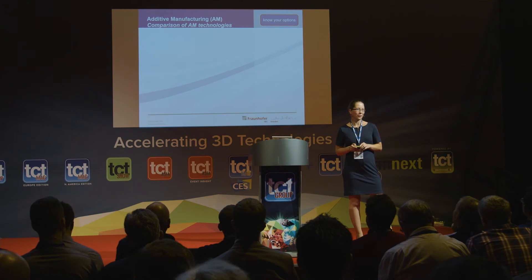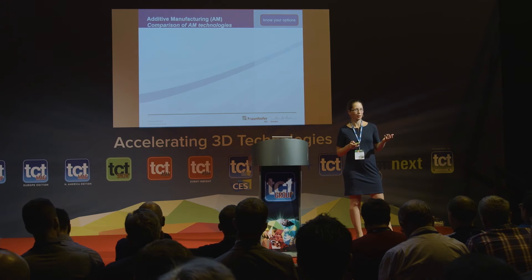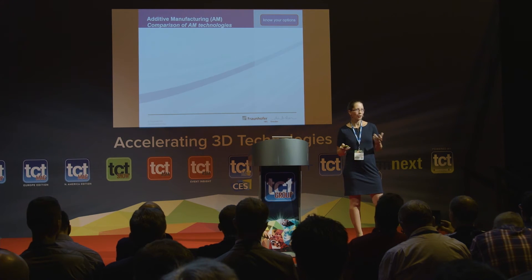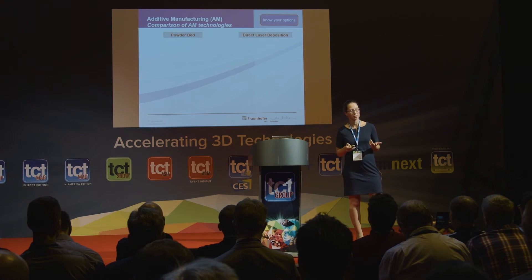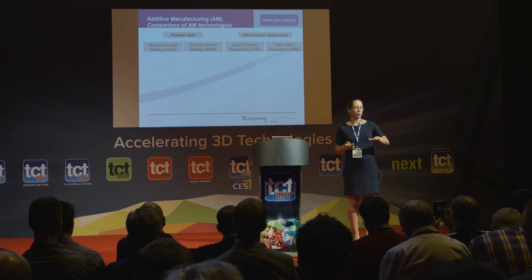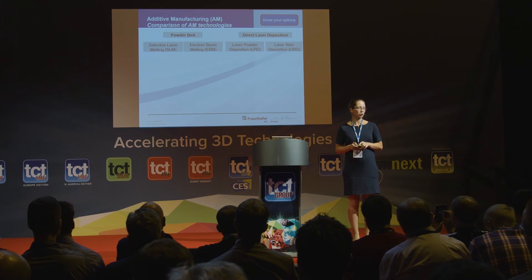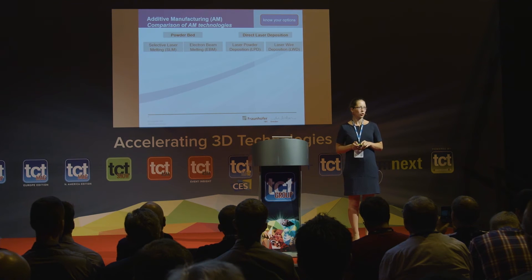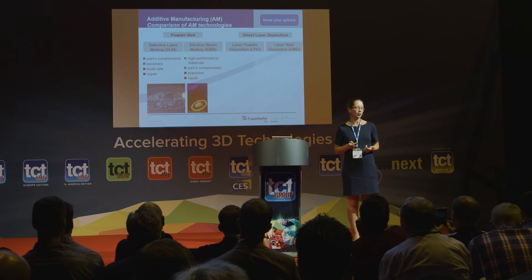Regarding metal additive manufacturing technologies, we have powder bed processes and direct laser deposition. In powder bed, a layer of powder is spread, an energy source selectively melts it, the bed is lowered by one layer, a new coat spreads a new layer, and you repeat until the part is built — using either laser or electron beam as the energy source. The other approach is direct laser deposition, where powder is fed exactly into the focus of the laser or energy source, and you can use either powder or wire as the supply.